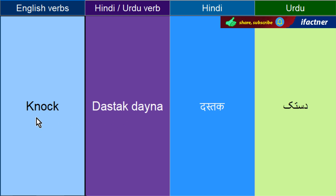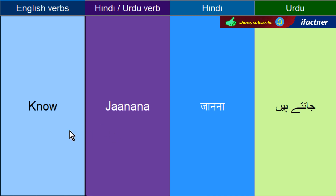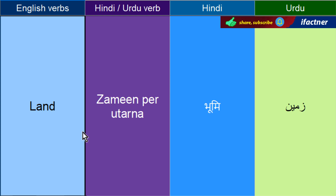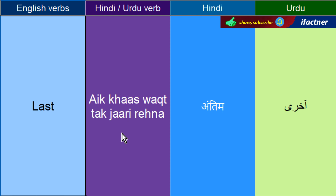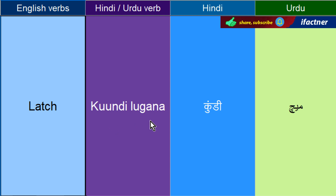Dastak dayne ko kaha jata hai — Knock. Jaanna — Know. Laadna — Load. Zameen per utarna — Land. Jis saan jahaz zameen per utar raha hai: The plane is landing. Aakhri — Last. The film will last till five o'clock — keh paanch bajay tak film laghi rahegi, jari rahegi, chalti rahegi. Kundi lagana — Latch. Dawaazay ko kundi laga do — Latch the door.